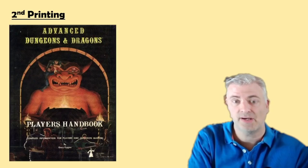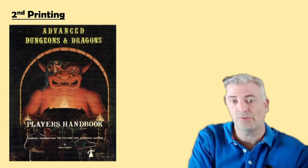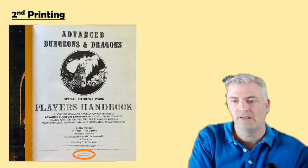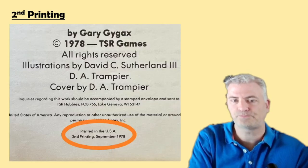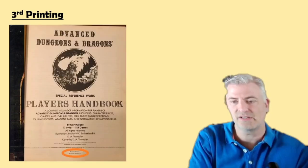The second printing has the exact same cover. Unlike the Monster Manual, not much precise identification can be made just by looking at the cover — in fact only one printing can be identified that way. But almost all the printings can be identified instantly by looking at the copyright page. The second printing shows 'Second printing, September 1978' at the bottom. The third printing has the same cover, and the copyright page now says 'Third printing, January 1979.'